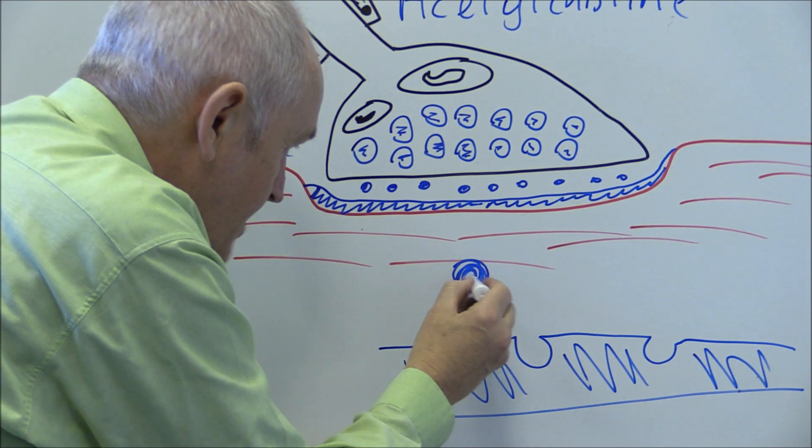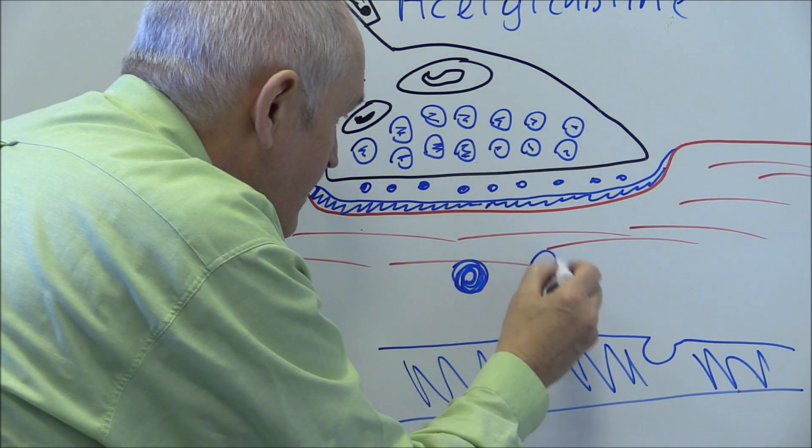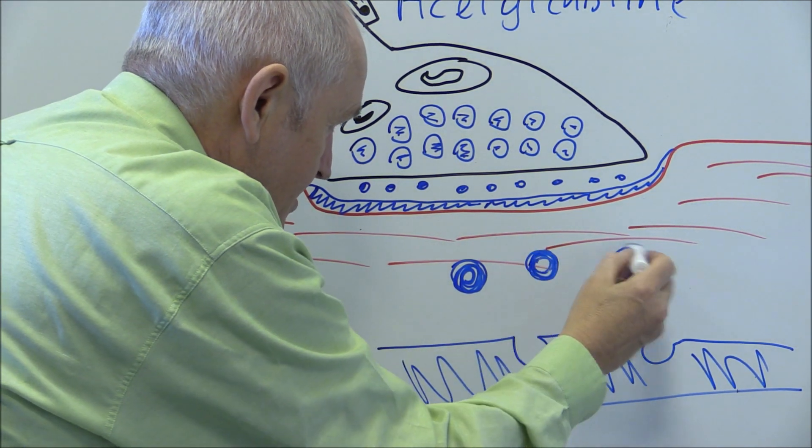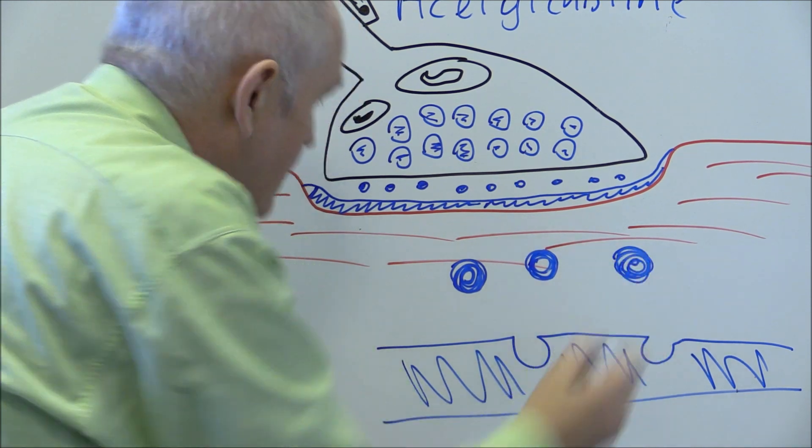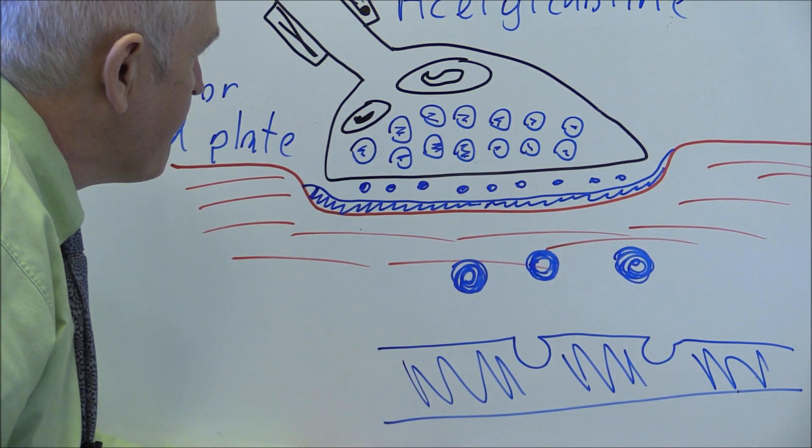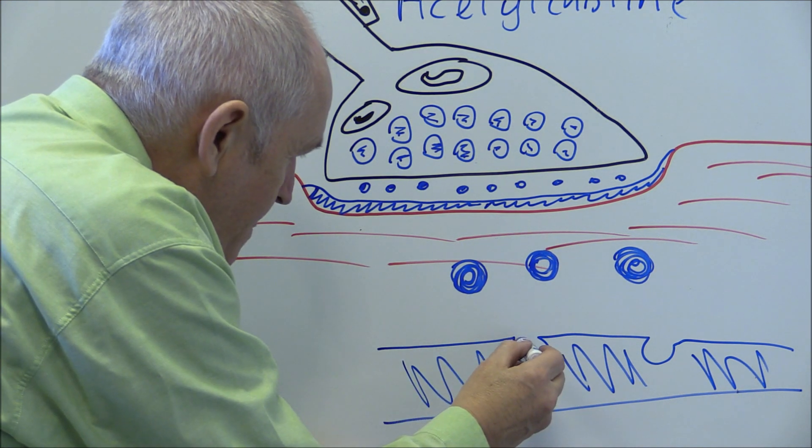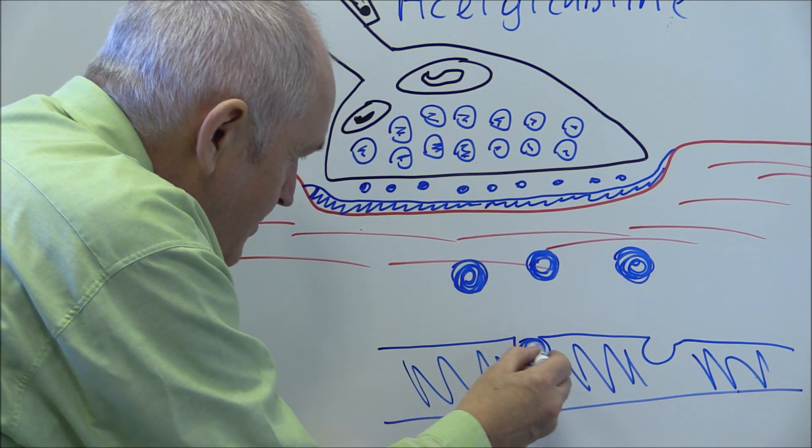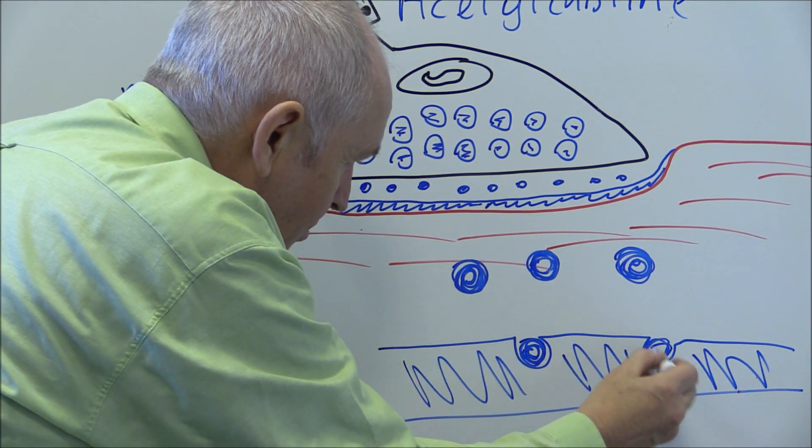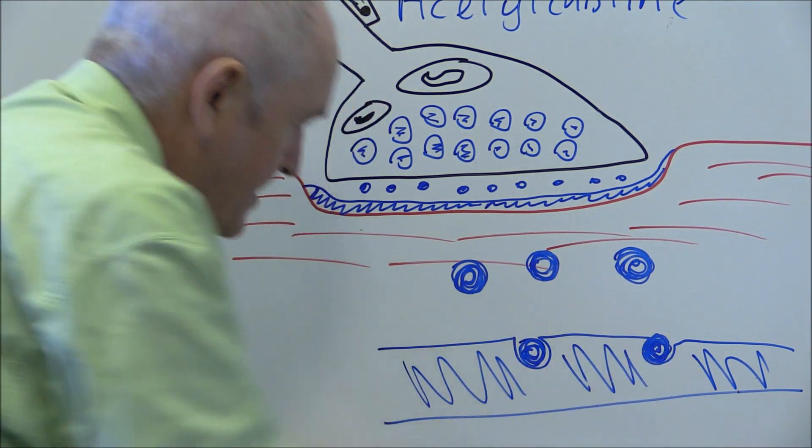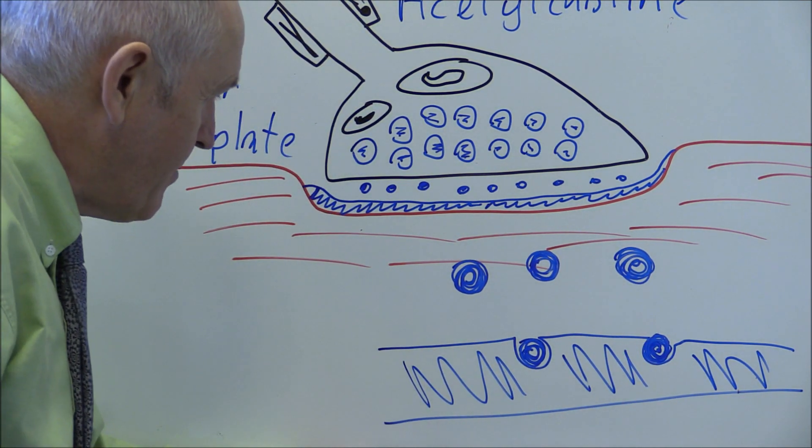The acetylcholine molecules are released from the end part of the motor neuron, this motor end bulb. The acetylcholine molecules fit into the acetylcholine receptor sites on the motor end plate.